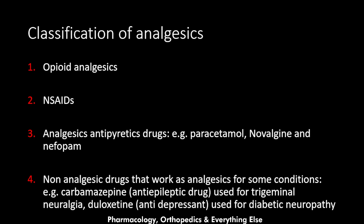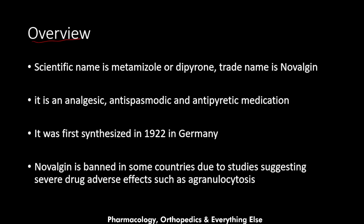Before we explain the pharmacology of novalgine, let's place it in relation to other analgesics used in medicine. Generally speaking, we have four groups of analgesics: the opioid analgesics, which we already explained in the CNS pharmacology class; the NSAIDs; the analgesic/antipyretic medications, which include novalgine, paracetamol, and nefopam; and the fourth group — non-analgesic medications that work as analgesics for certain conditions, like carbamazepine for trigeminal neuralgia and duloxetine for diabetic neuropathy.